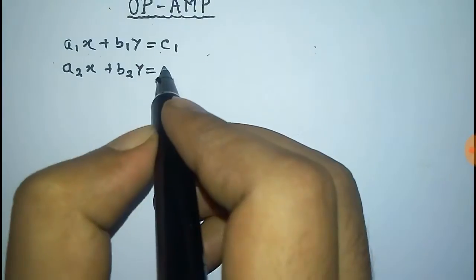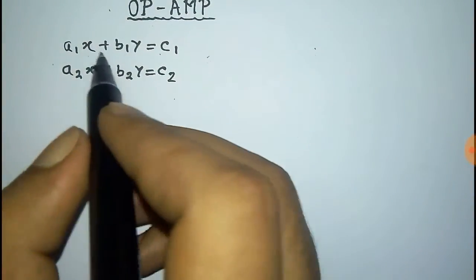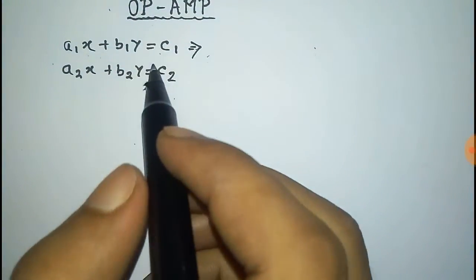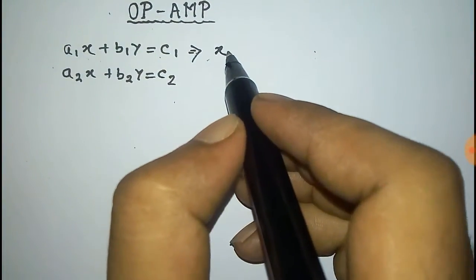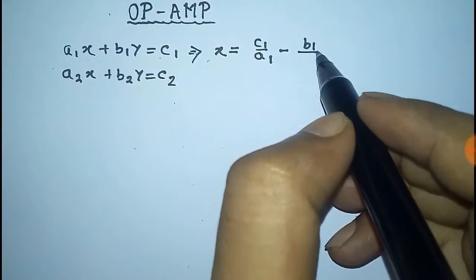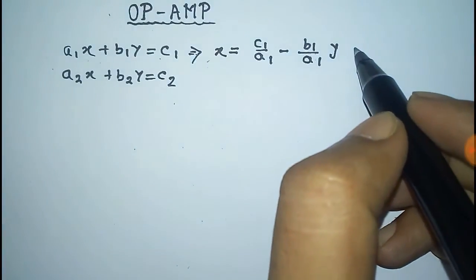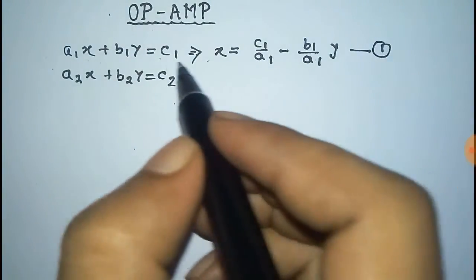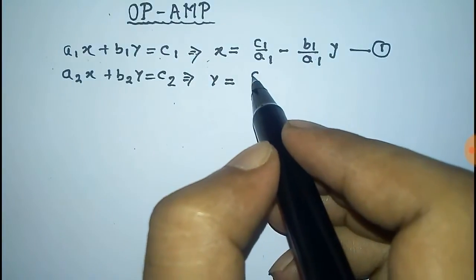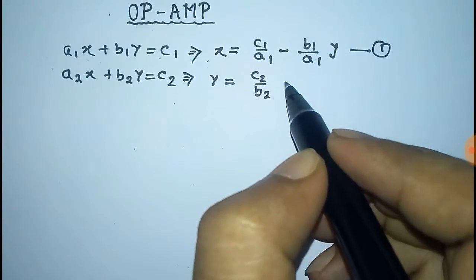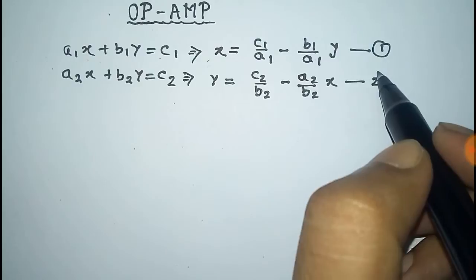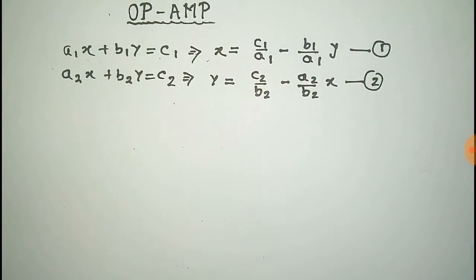Now we have to solve these two equations. From the first equation we take the value of x: x = c1/a1 − (b1/a1)·y. From the second equation we take the value of y: y = c2/b2 − (a2/b2)·x. Thus we get two equations of x and y individually.